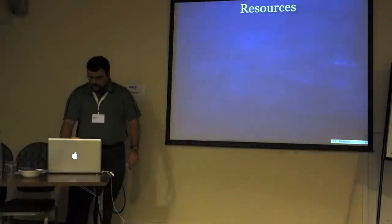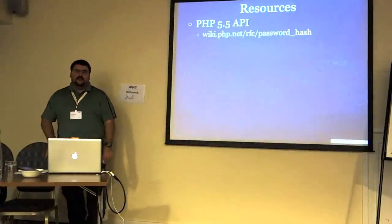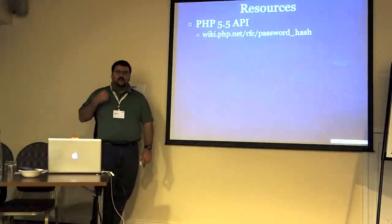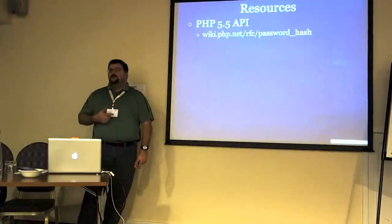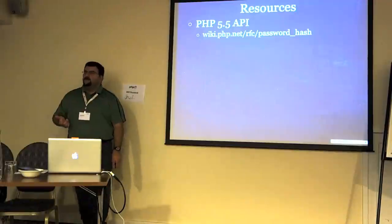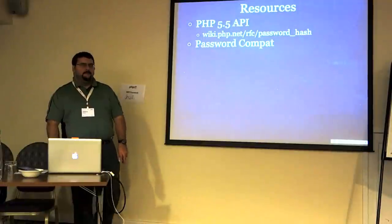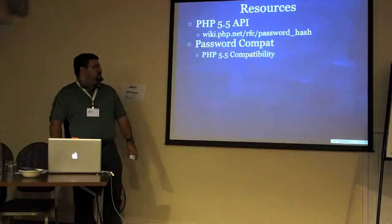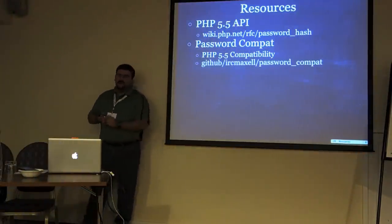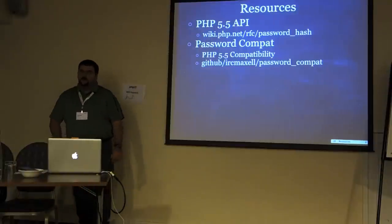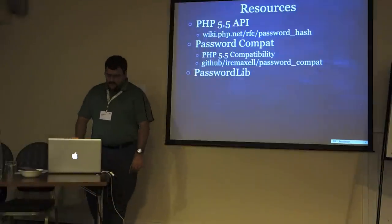Some resources for more information: the PHP 5.5 API is available at wiki.php.net. I was doing the last bug fixes last night before pushing it in — as soon as I test those, I'll push it into PHP trunk and you'll be able to download and play with it in nightly builds. Password Compat is a compatibility library for 5.5 that exposes the identical API in pure PHP code, maintained on GitHub. It works for PHP 5.3.7 and newer.